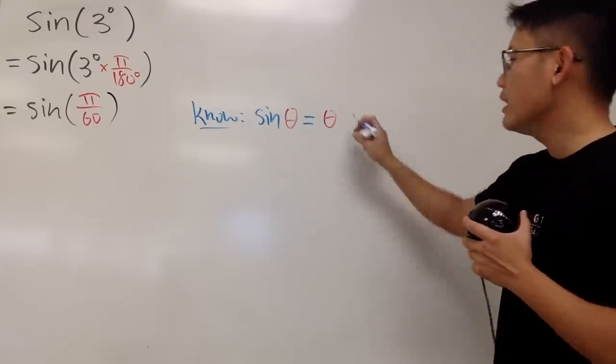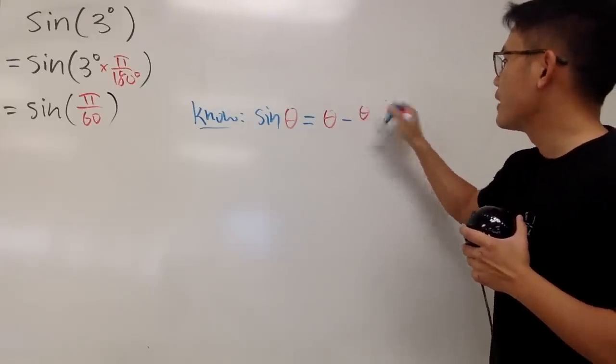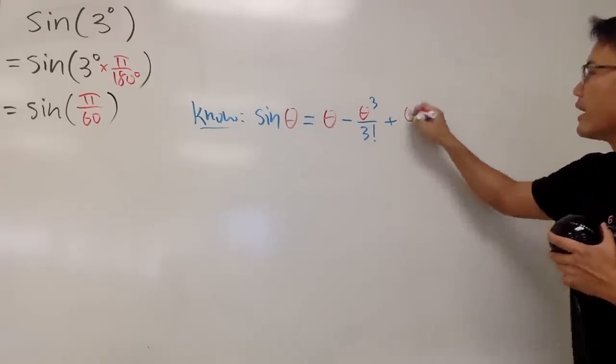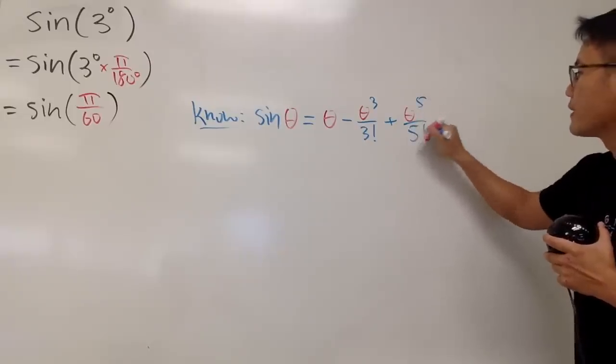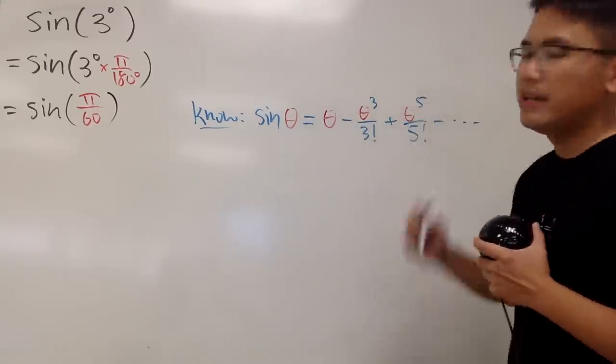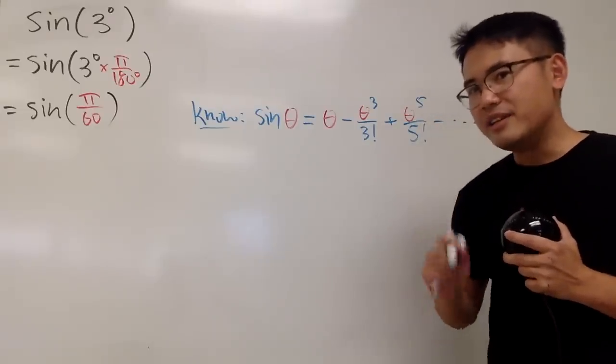And we minus theta to the 3rd power over 3 factorial, and we add theta to the 5th power over 5 factorial, and then subtract, and so on. So this is the Taylor series expansion for sine centered at 0. The keyword is centered at 0.